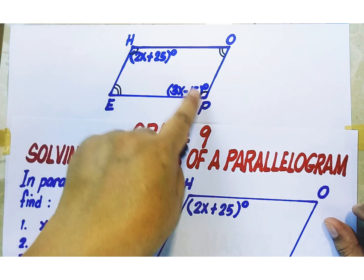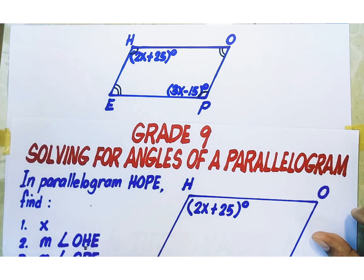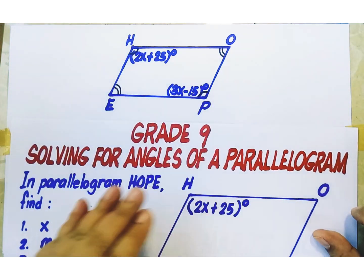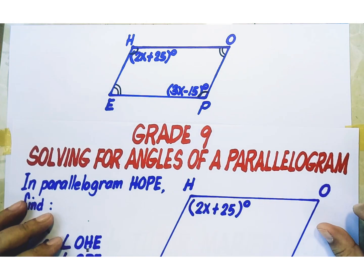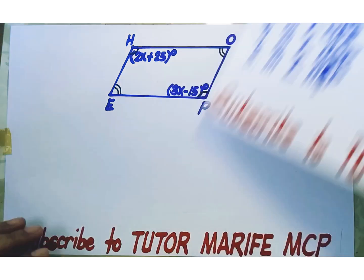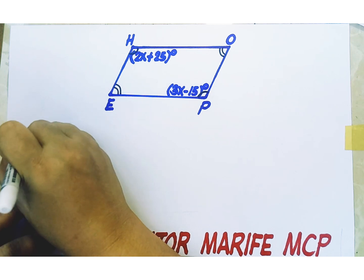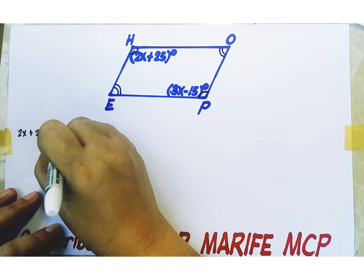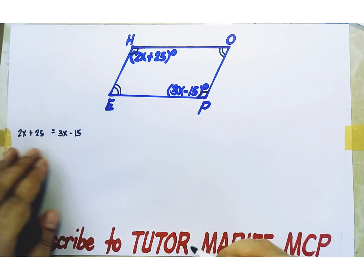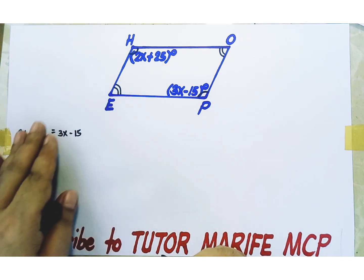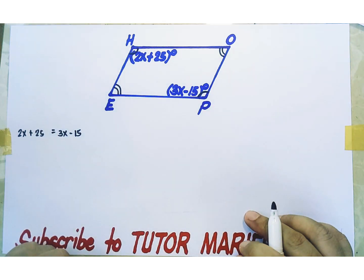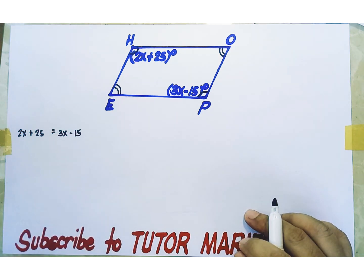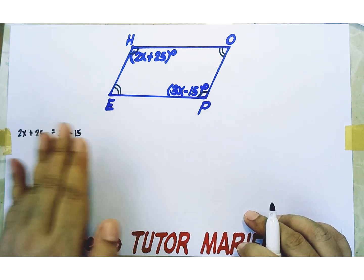We can equate the two expressions representing the respective measure of angle H and angle P because they are equal. So, 2X plus 25 equals 3X minus 15. This equation comes from the application of the property relating the opposite angles of parallelogram H-O-P-E — they are congruent. Now, solving this linear equation: how do we solve a linear equation in a single variable?